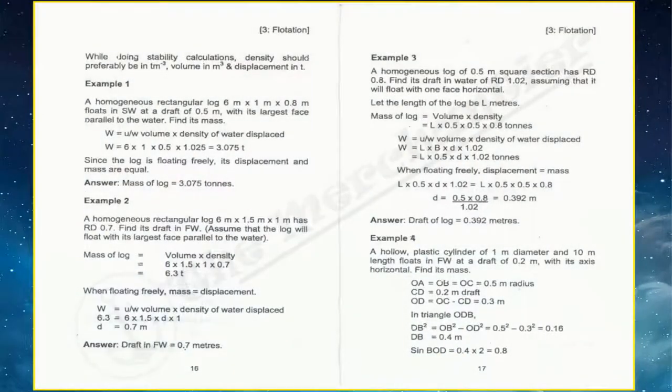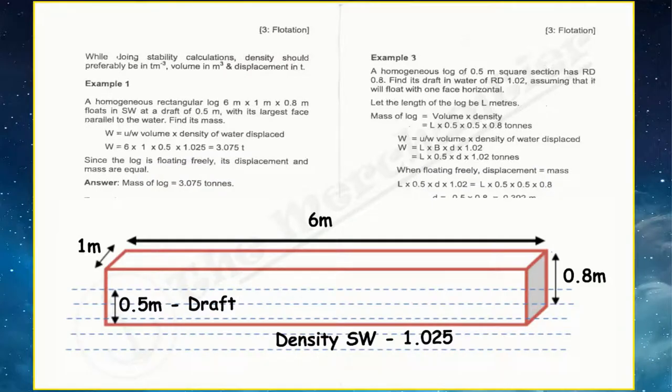Now coming to example number one. A rectangular log hai jiska dimension 6 meter, 1 meter, 0.8 meter hai jo salt water mein float kar raha and the draft is 0.5 meter. Aur jiska largest face hai wo parallel hai water ke. So humein iska mass find karna hai. So with the help of earlier formula, that is displacement equal to underwater volume into density of water displaced, we can easily find the mass of log that is 3.075 tons.